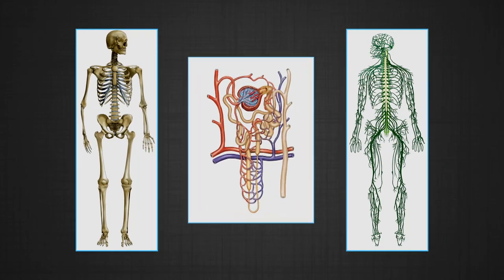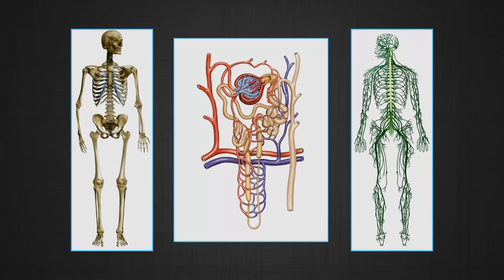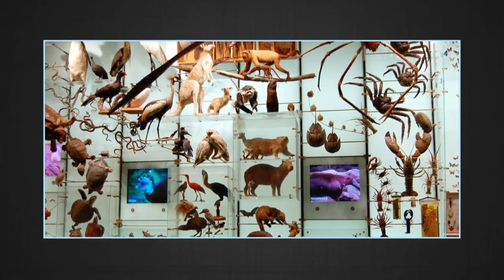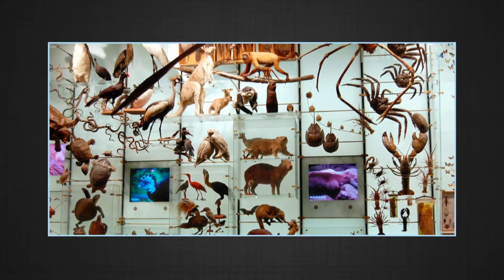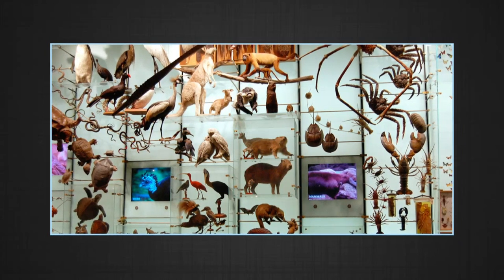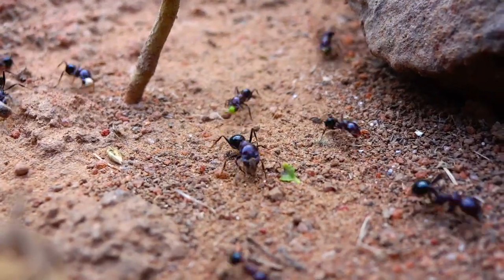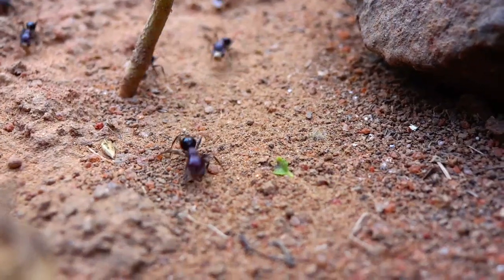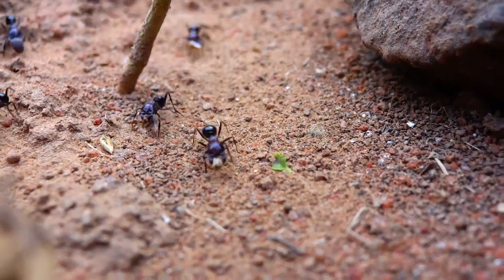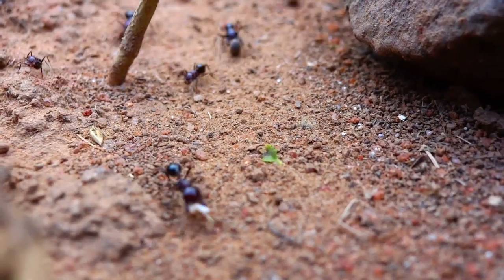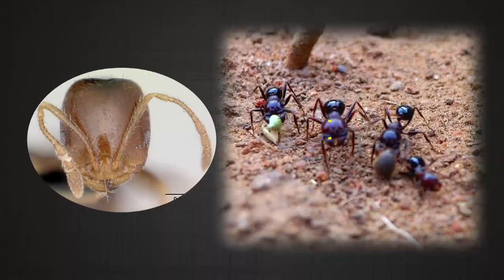Biology is the science of life forms and living processes. The living world comprises a wide diversity of organisms. The observation of the diverse forms of life on earth was made initially through the naked eyes, and later by using instruments such as magnifying glasses and microscopes.